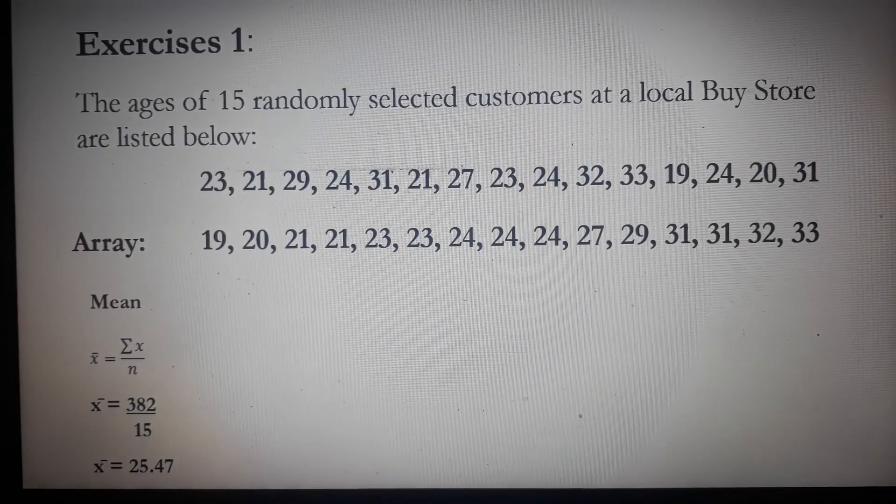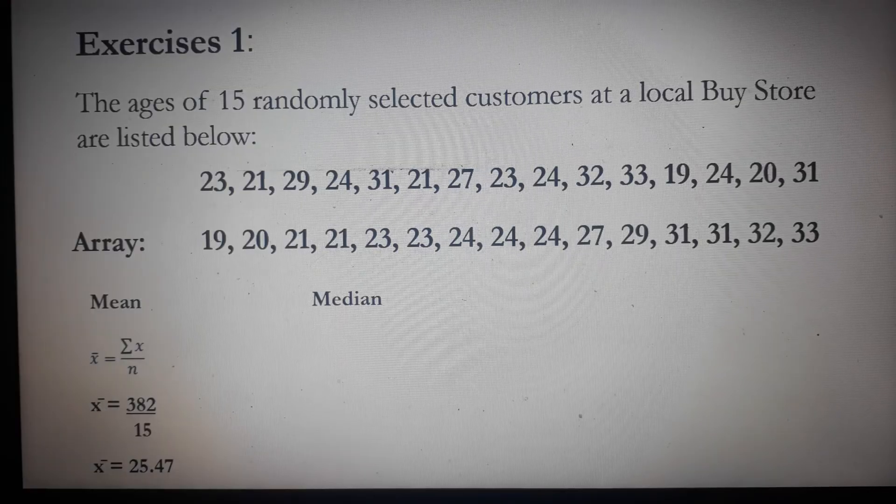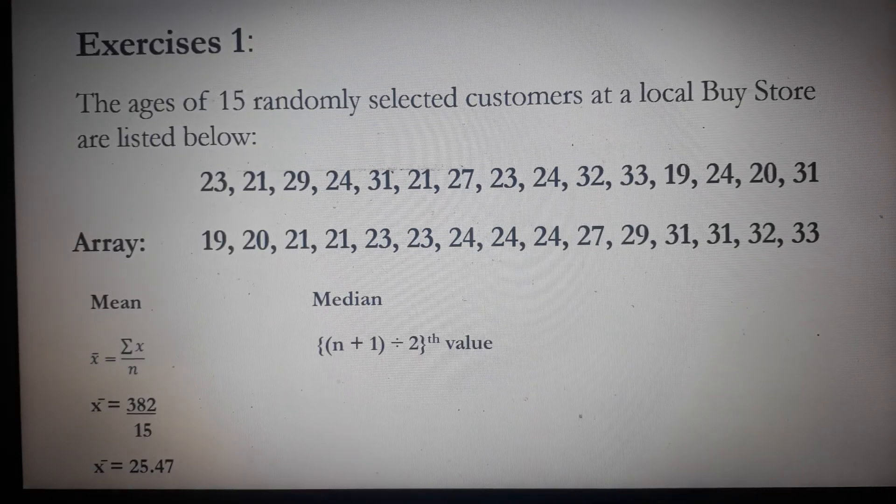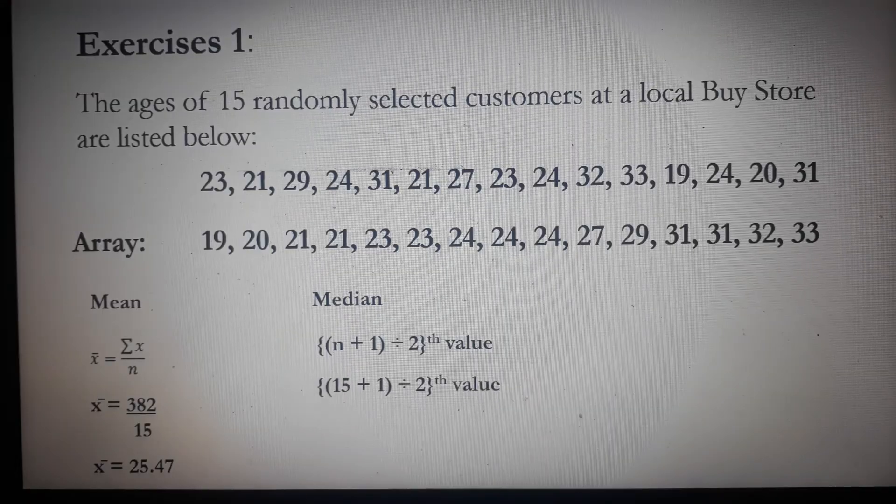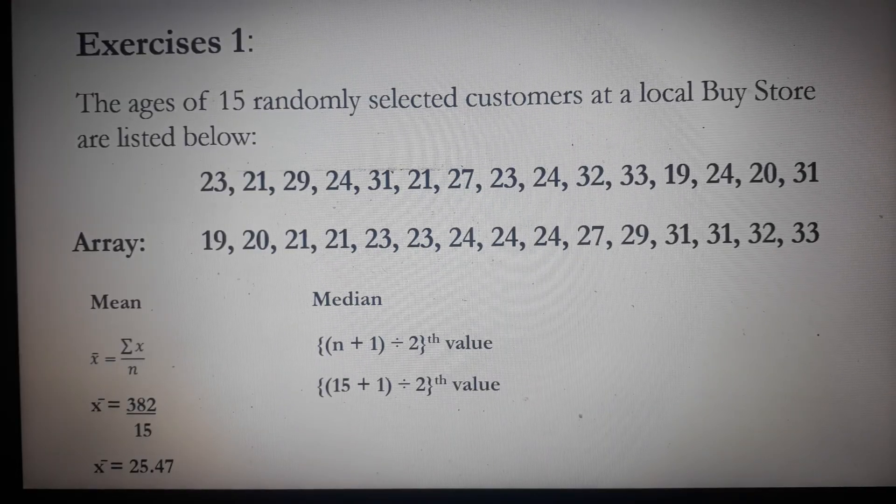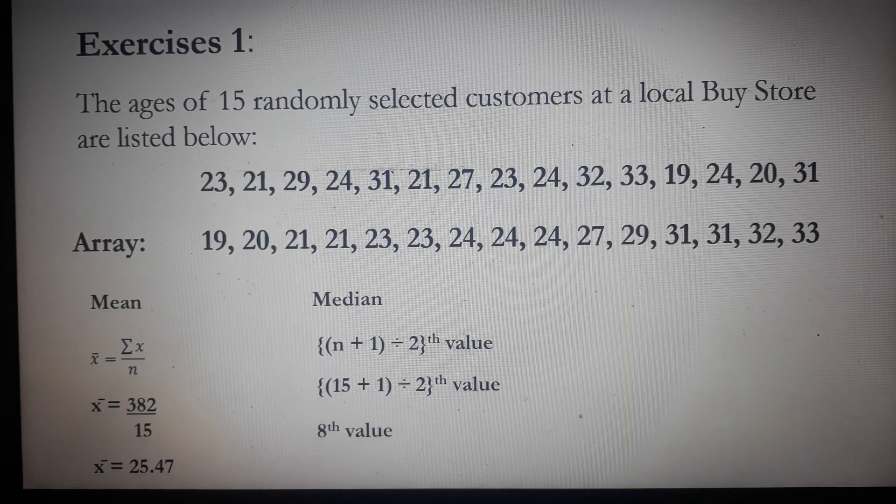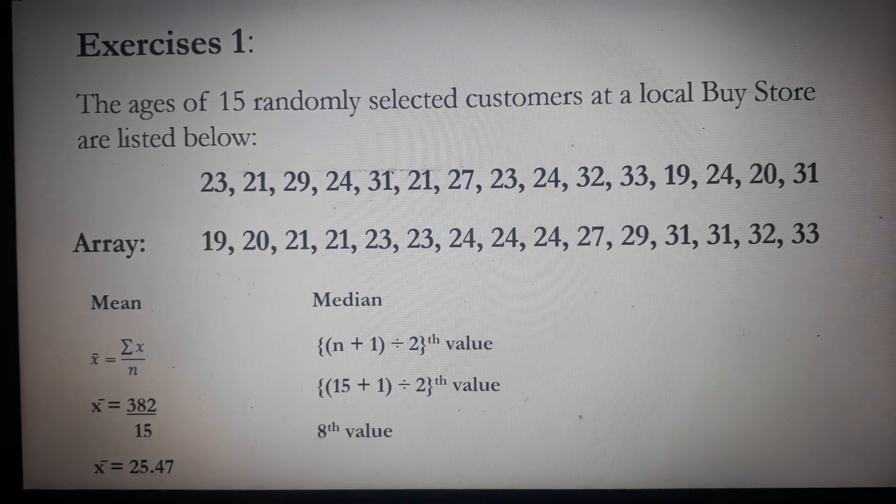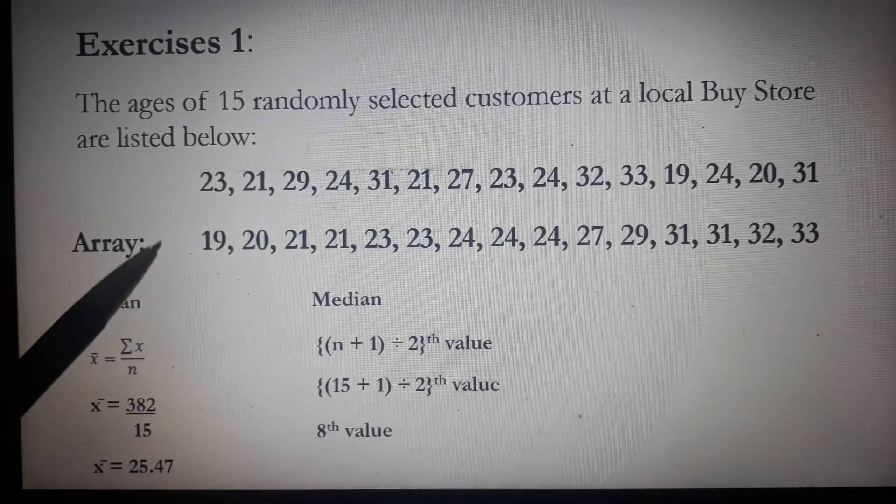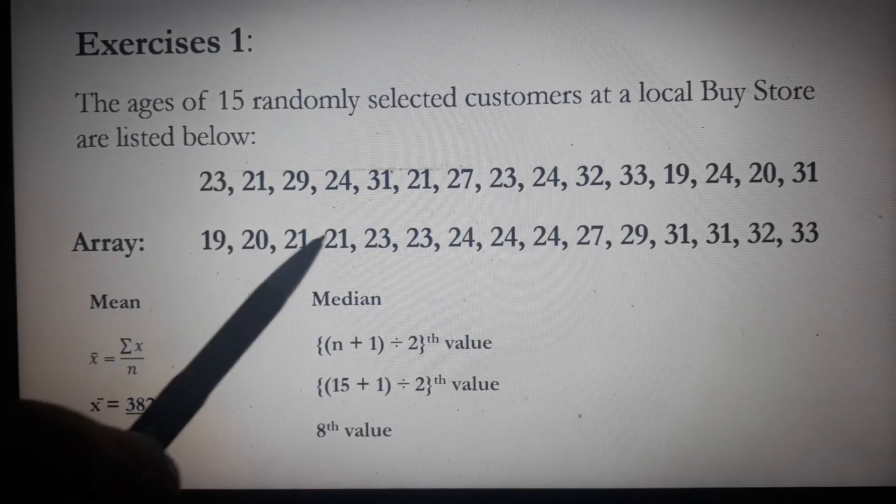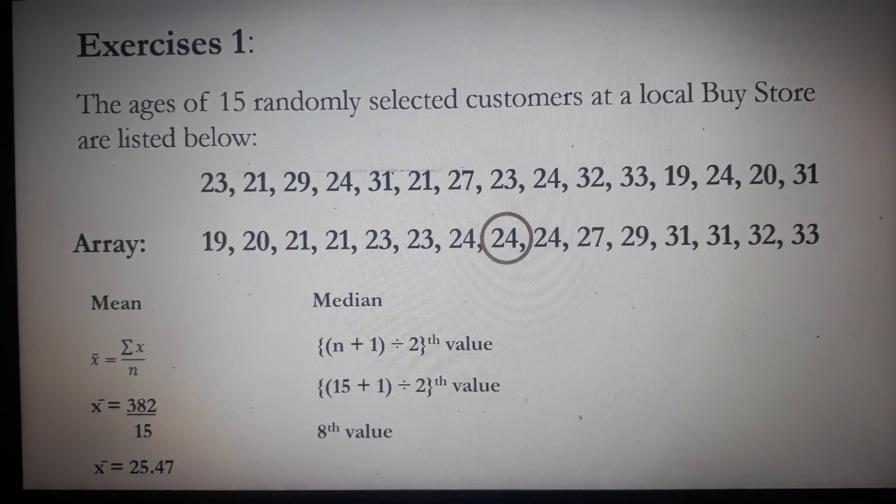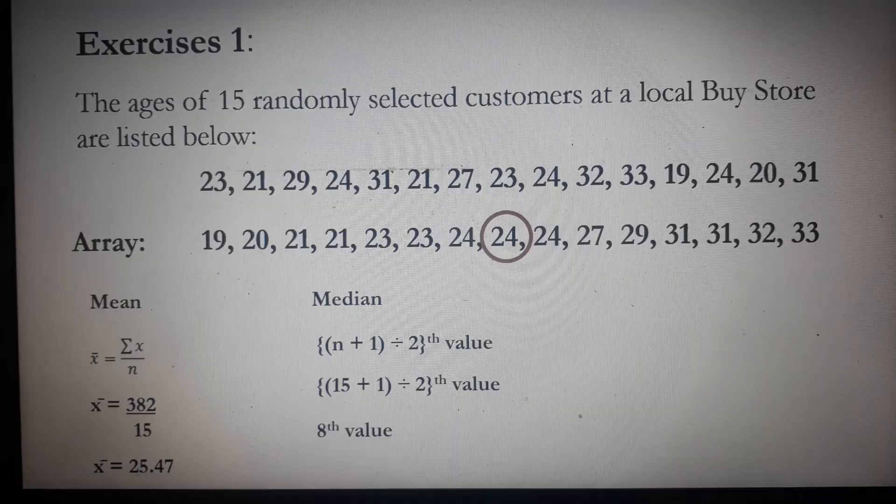Now, let's locate the median. We will use this formula: n plus 1 divided by 2. So 15 plus 1 divided by 2 equals 16 divided by 2, which is 8. Our median is the 8th value in the array. You simply count: 1, 2, 3, 4, 5, 6, 7, 8. Therefore, our median is 24.